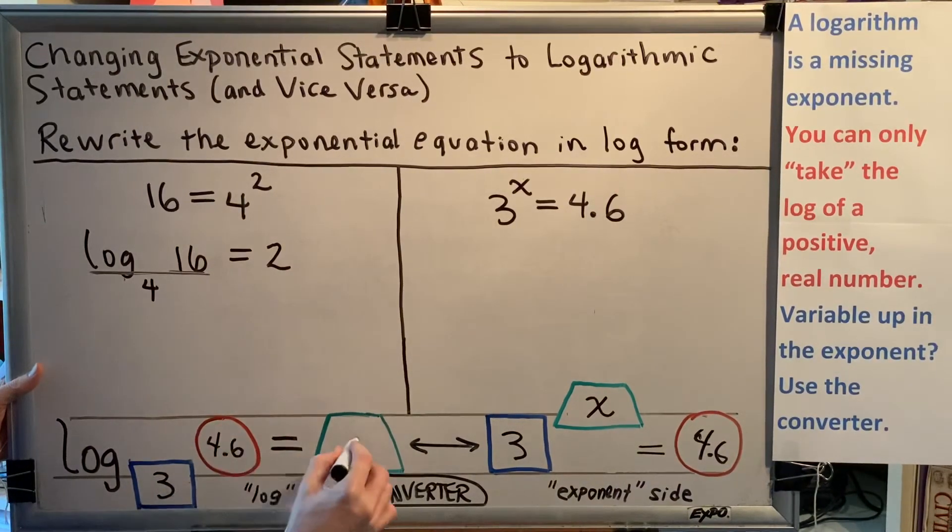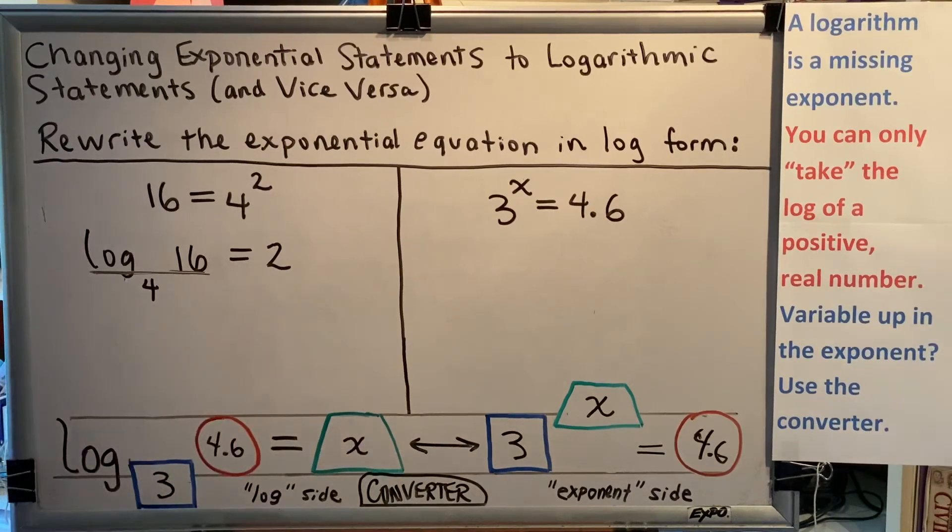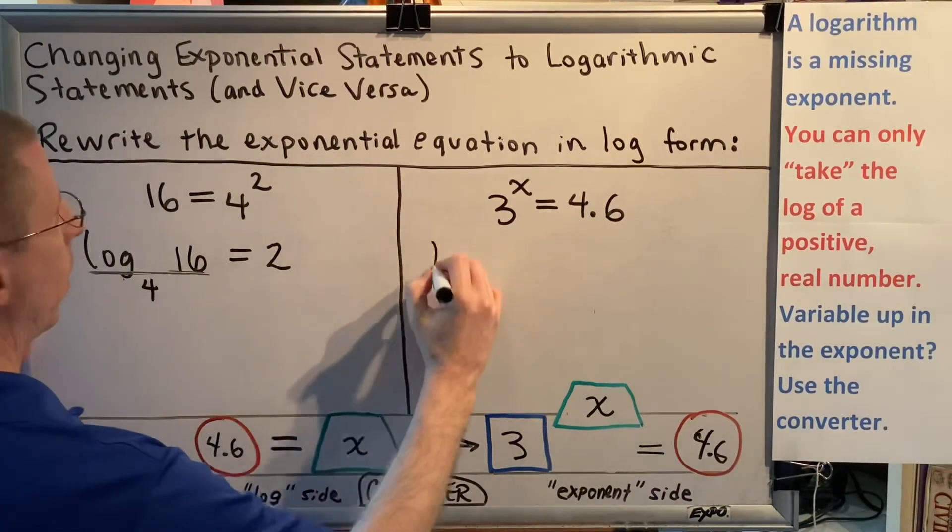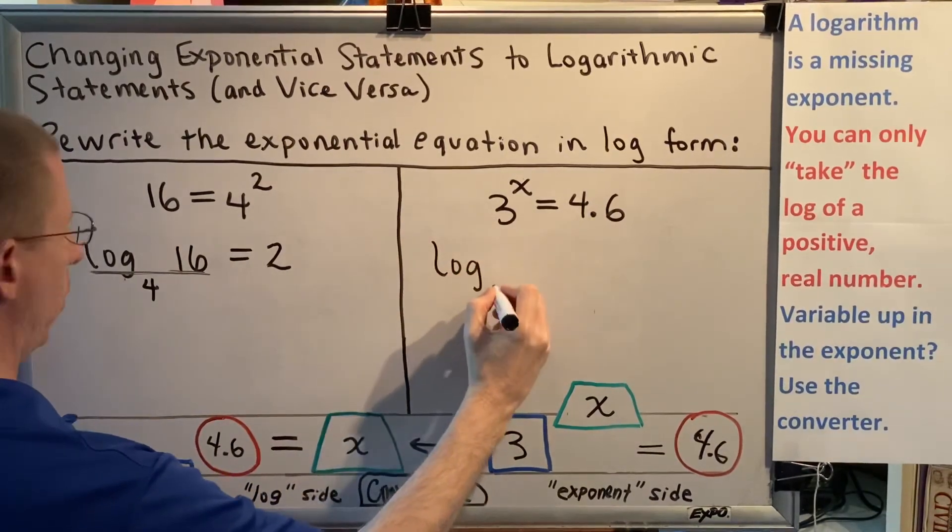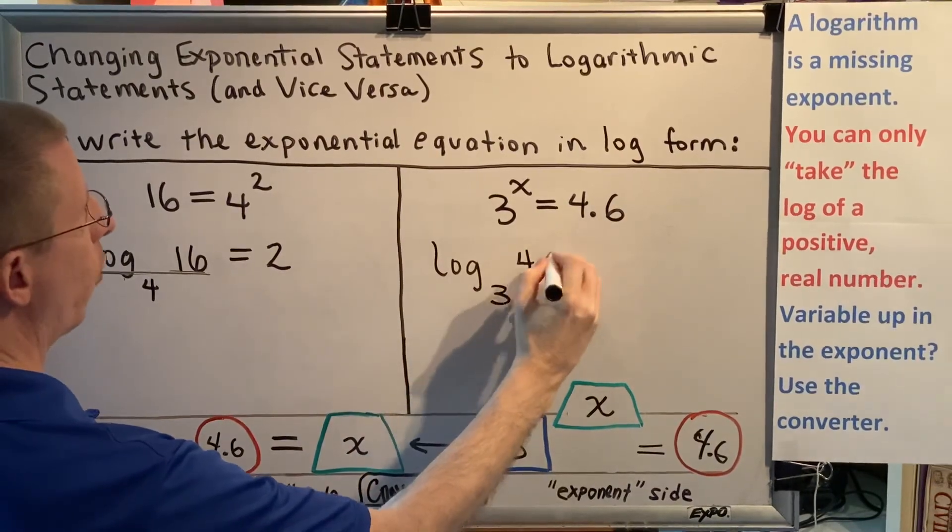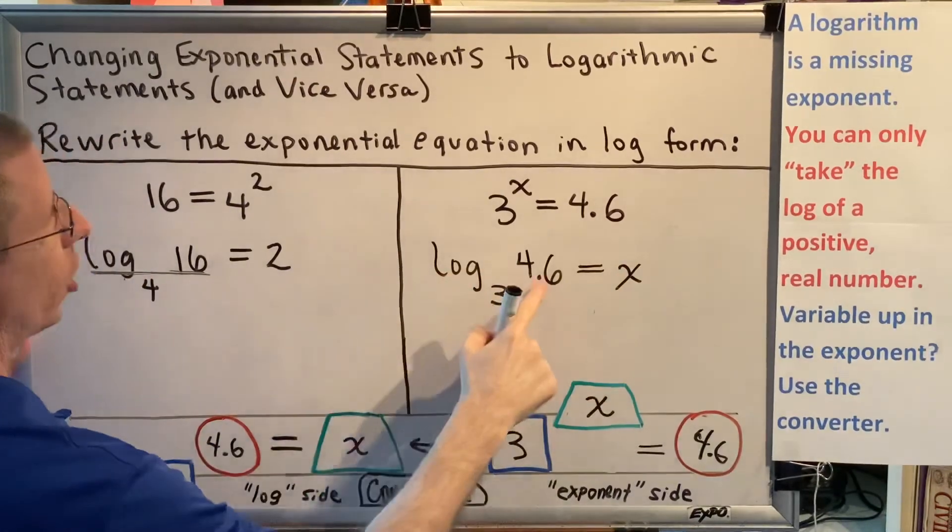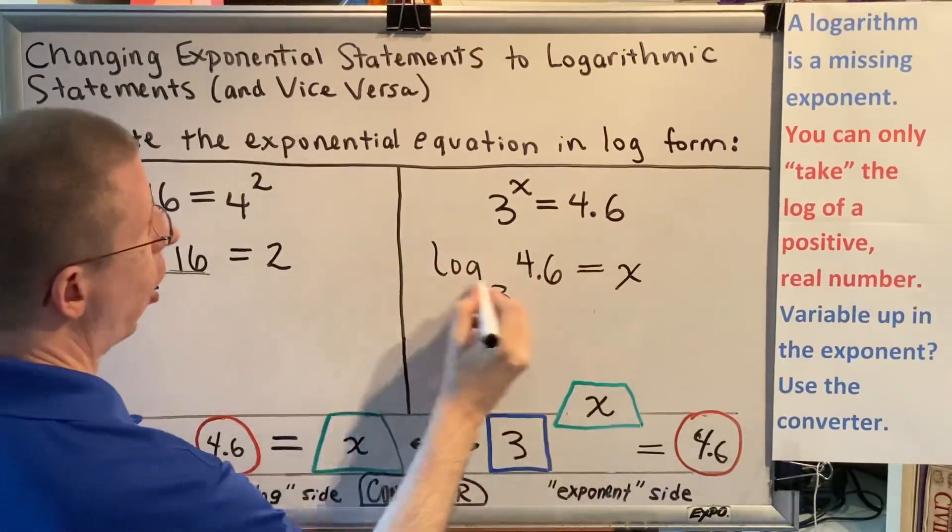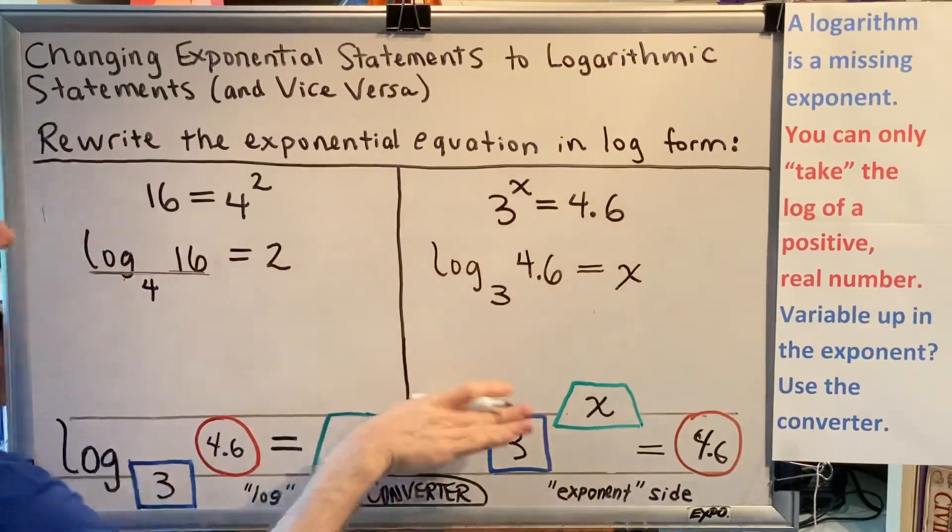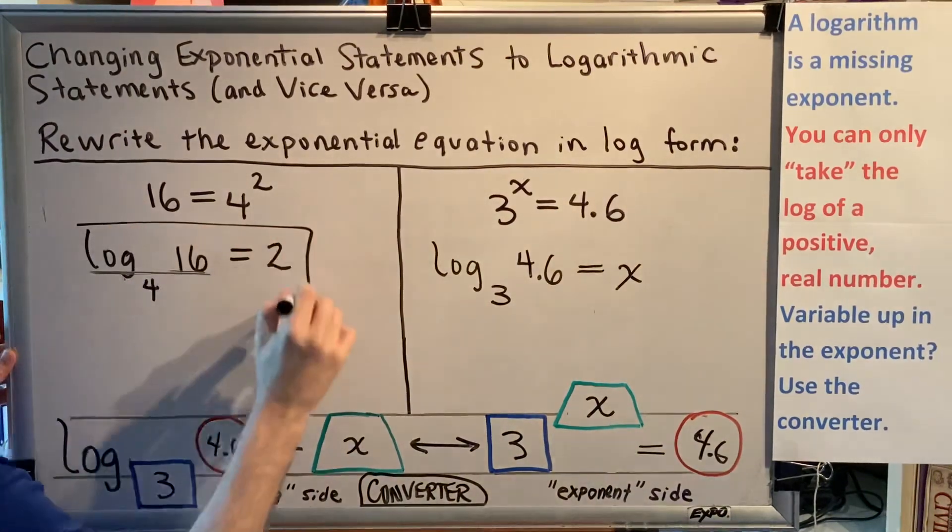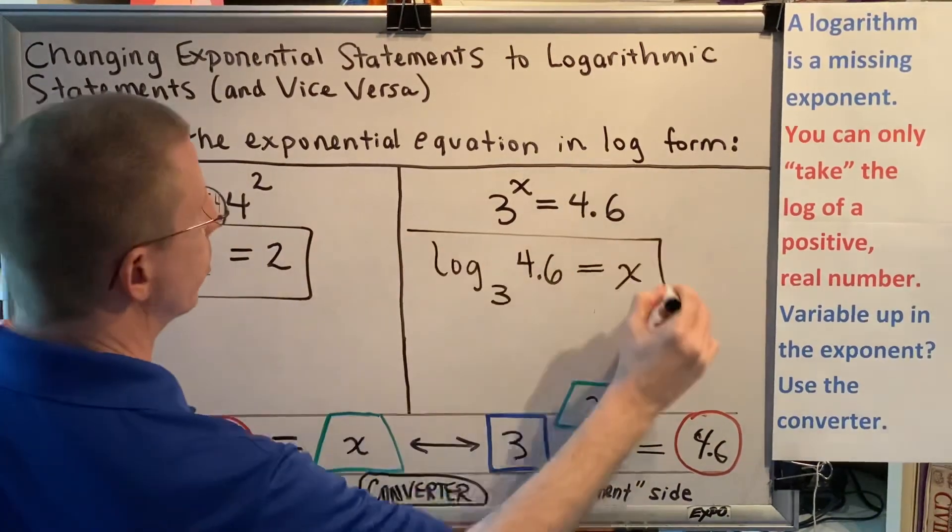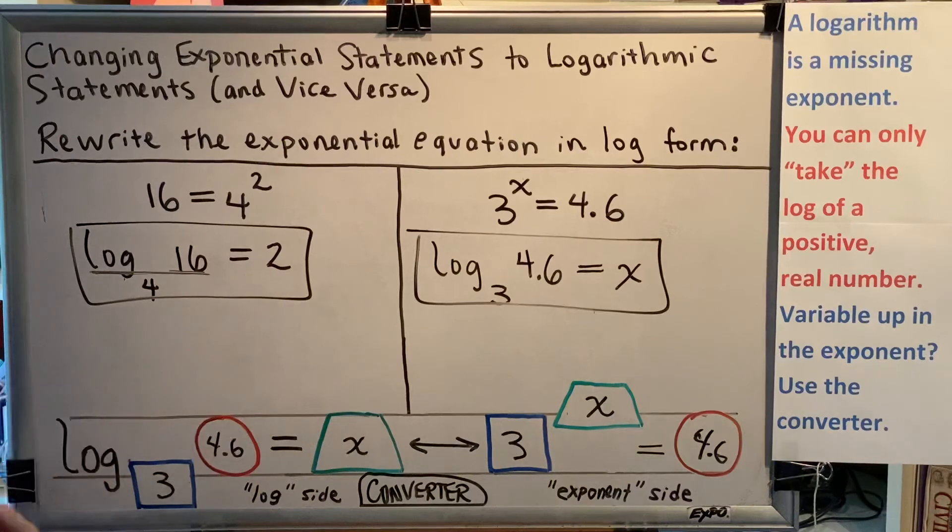So we write our logarithmic statement: log base 3 of 4.6 equals x. The log, the 4.6, and the x are sitting on the line. The 3 is below the line. These are the two answers for this particular problem.